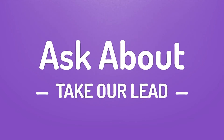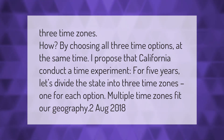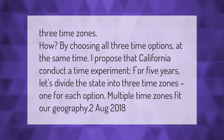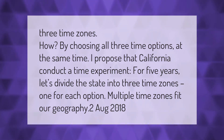I propose that California conduct a time experiment for five years. Let's divide the state into three time zones, one for each option. Multiple time zones fit our geography, pointing back to August 2018.